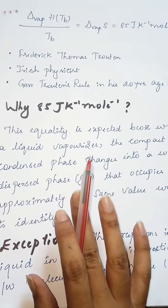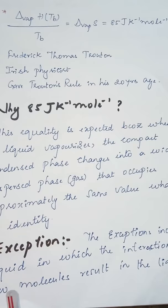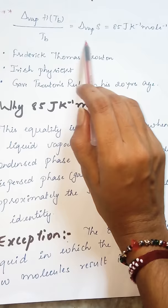In simple words, when a liquid is converted into gas, he assumed that whatever be the liquid, once it gets converted into gas, the volume occupied by any gas is approximately the same. So as the volume occupied is same, he assumed that the entropy of vaporization value is also equal to 85 Joule K inverse mole inverse for any kind of liquid.